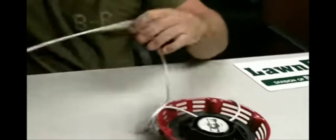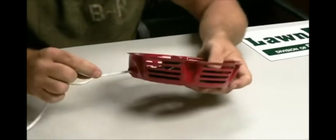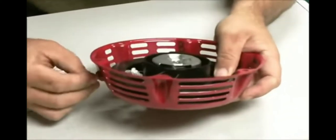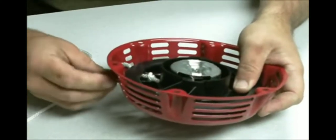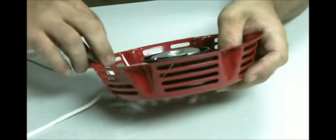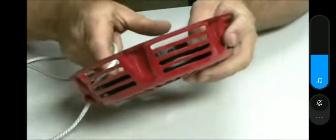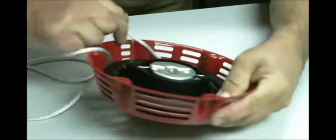Once you get that on there, make sure it's good and tight and won't come undone. Here's the critical part: setting the tension on the spring. You don't want to over tighten it. If you over tighten it, you'll end up bending or breaking the spring. You just wind this up.